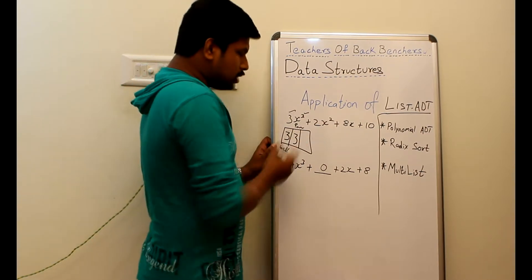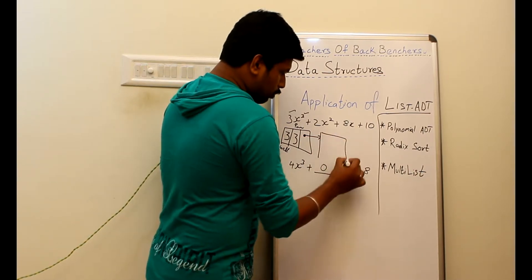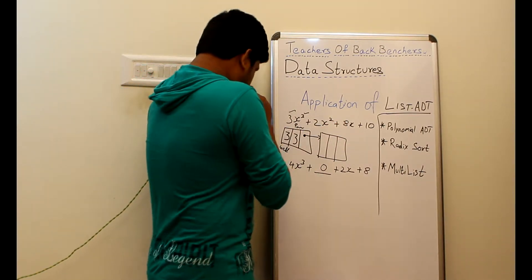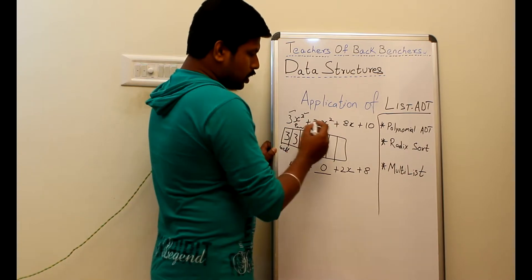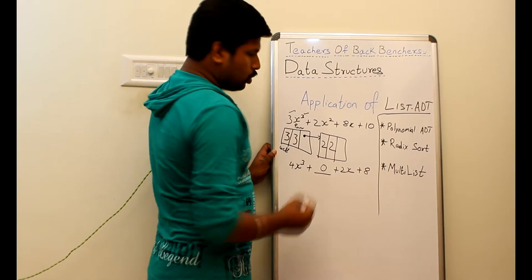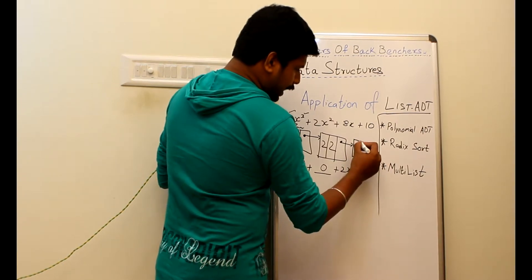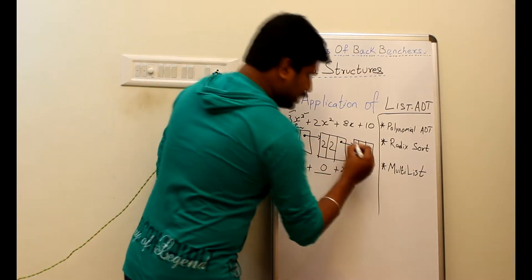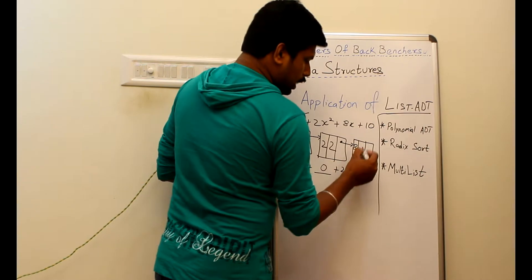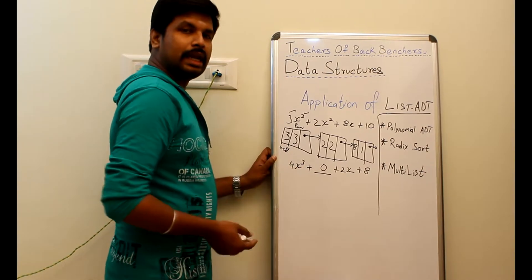The third segment consists of the next address, pointing to the next polynomial. In 2x², the coefficient is 2 and the power is 2. Then we move to the next node: 8x, where 8 is the coefficient, the power of x is 1, and it goes on. This is how we represent a polynomial expression in a linked list manner.